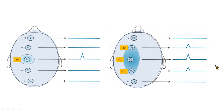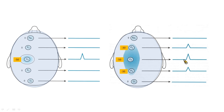Now looking at the right side picture: the F3 potential is negative 50, and we also record an upward wave. The FP1 potential gives a flat line on the EEG. F3 and P3 have a potential of negative 30, so we record an upward wave. The C3 potential is negative 50, so we also record an upward wave, but with a larger amplitude than F3 and P3 due to its more negative potential.